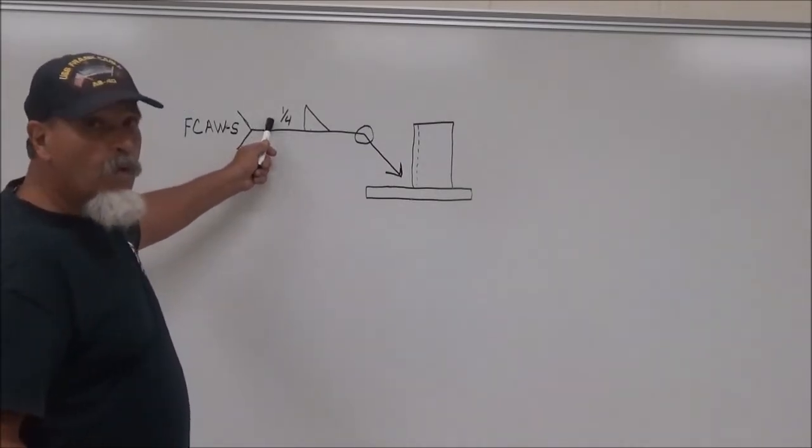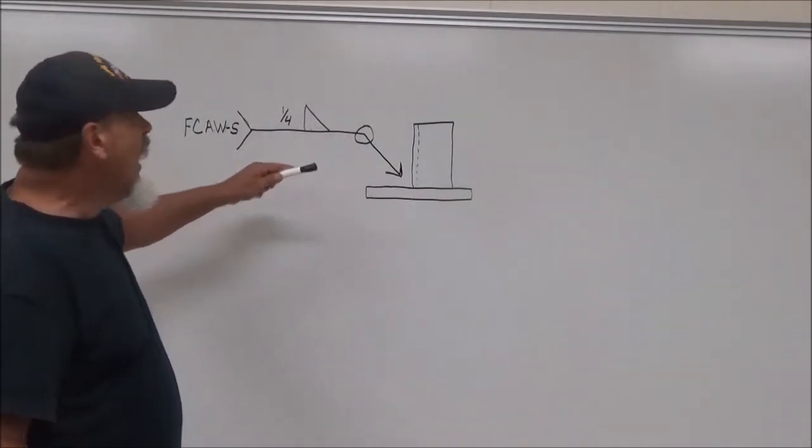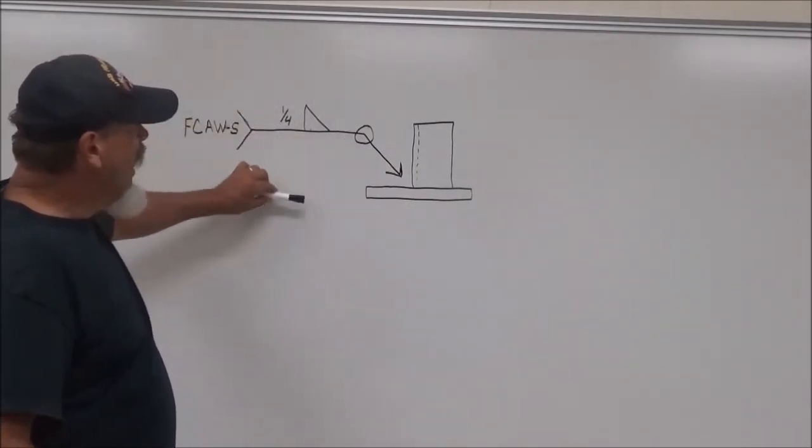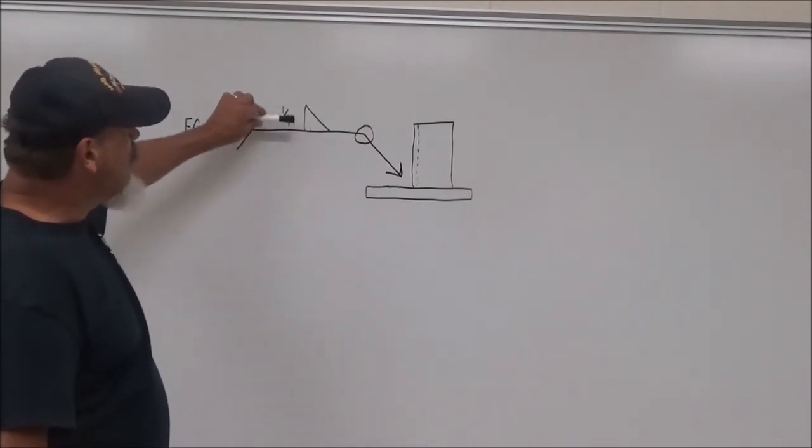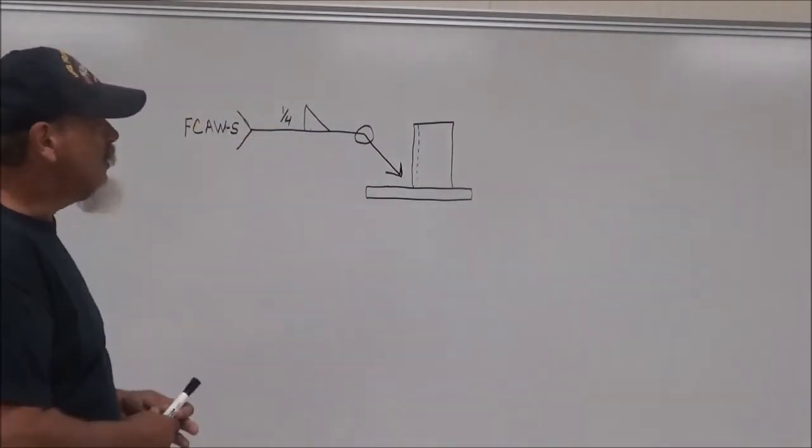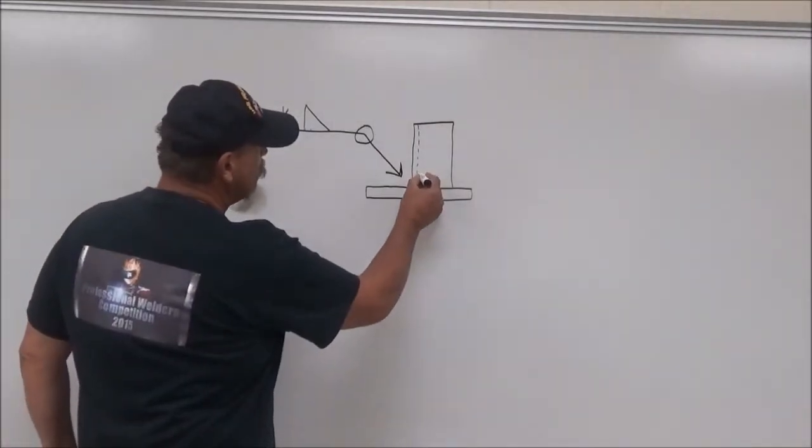We're going to make a one quarter inch fillet weld. And where's it going to go? Remember that. Other top, bottom arrow. If this symbol is down here, it would be on the other side, but it's not. So this is going to be on the inside. So where's our weld going to go at? Our weld is going to go on the inside here.